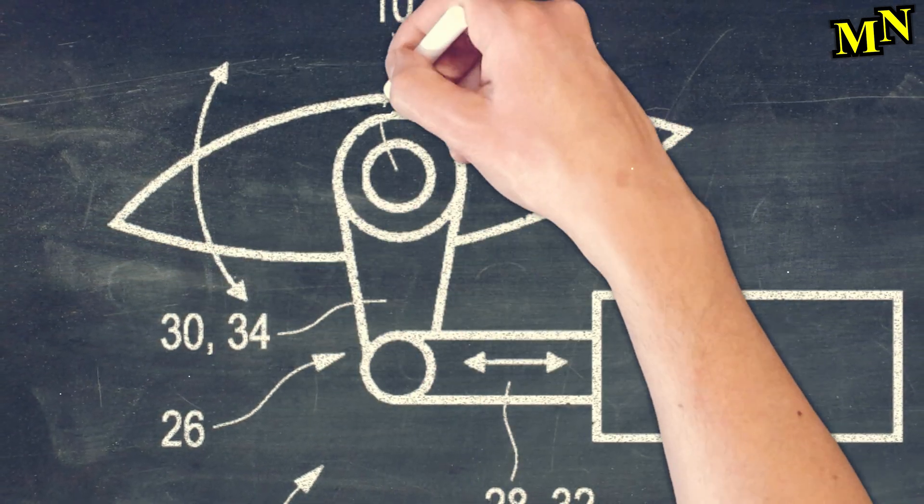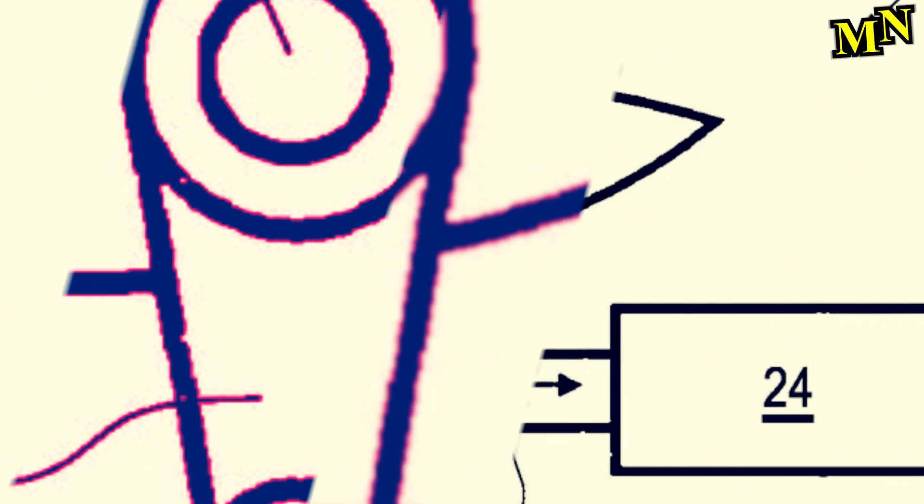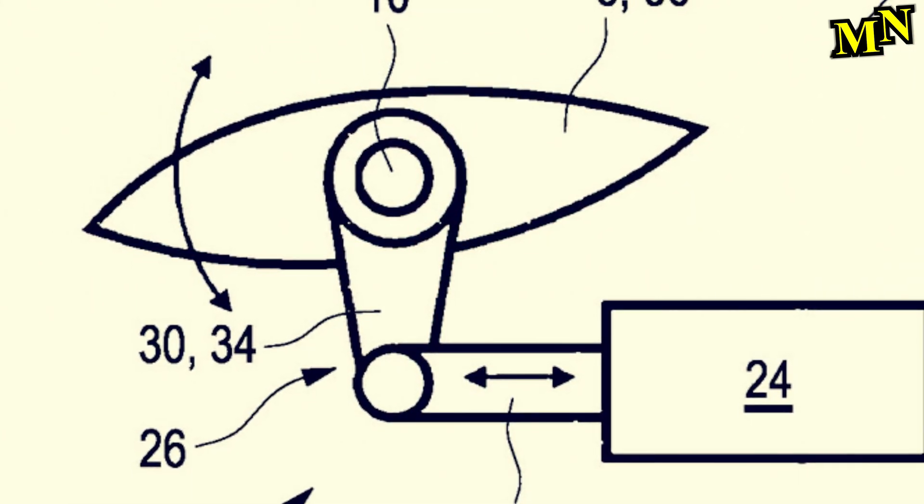The ECU should take into account the throttle position, the braking force, the speed, acceleration and bank angle in order to generate maximum traction, as much or as little drag as possible.